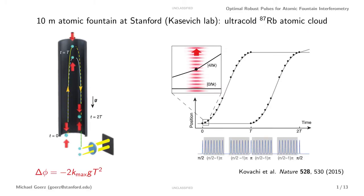The setup that we're targeting is this 10 meter atomic fountain in the lab of Mark Kasevich. The way it works is that you have a cloud of rubidium atoms that get launched into this tower and you have laser pulses imparting momentum kicks on the atoms.